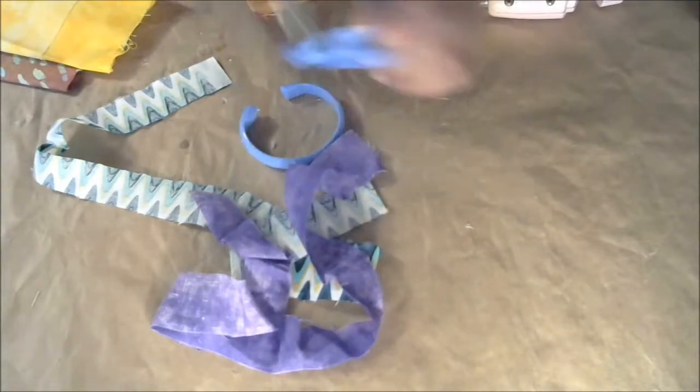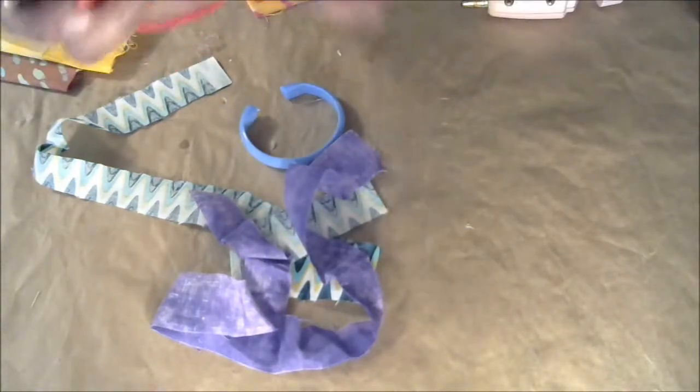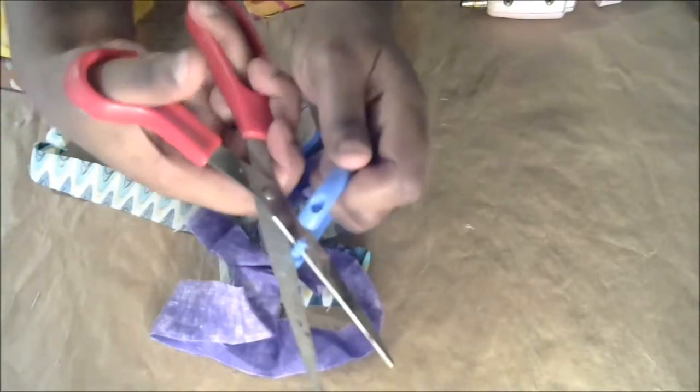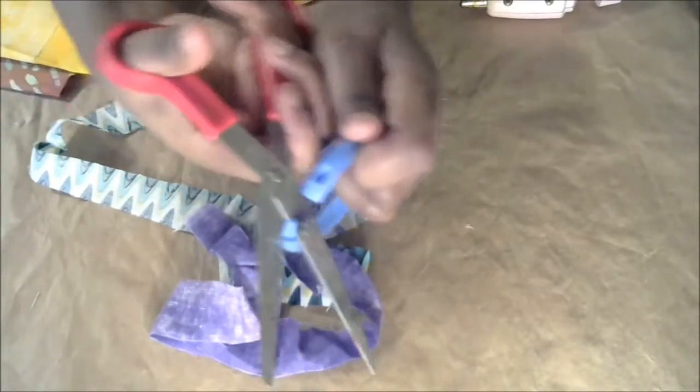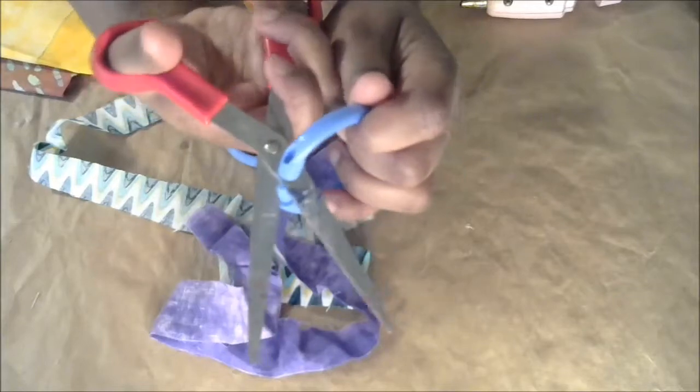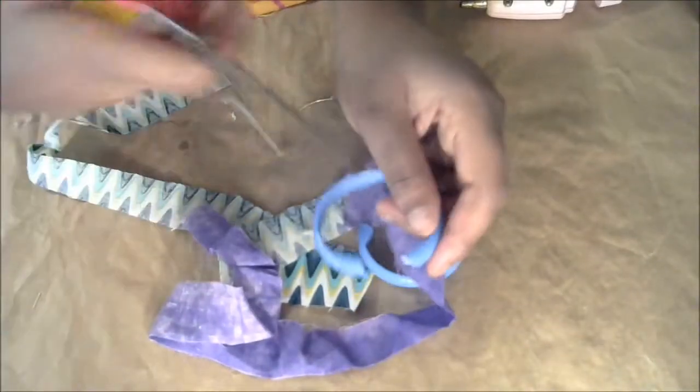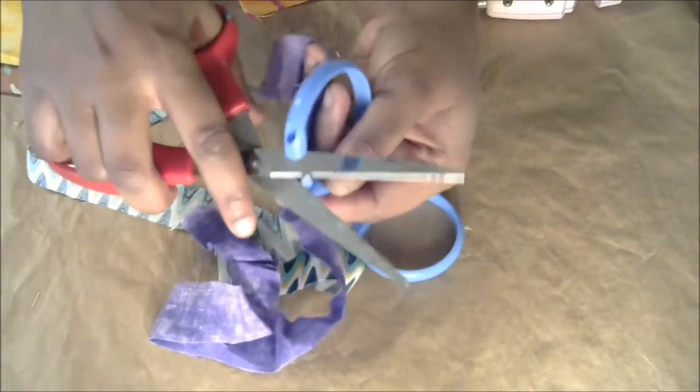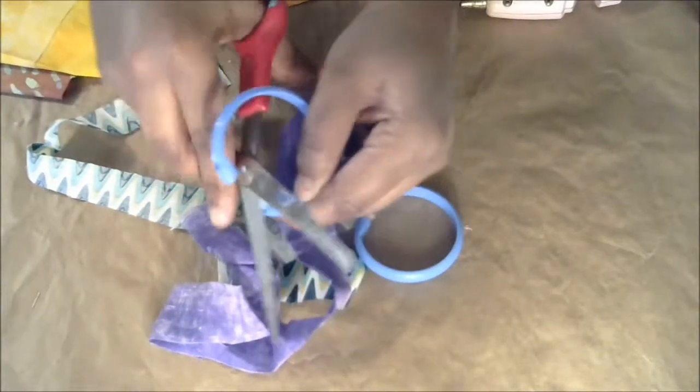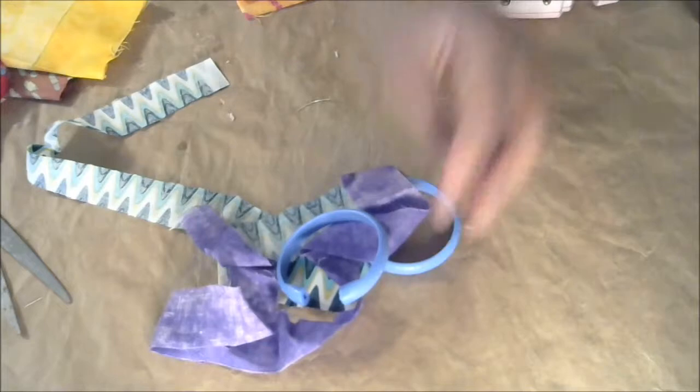We're just going to cut off this pokey end here that connects it. See how that connects it together? We're just going to cut that part off just like that. I'm going to cut this one down a little bit more so it'll be smoother. Then we are going to grab our strips of fabric, we'll start with this one first.